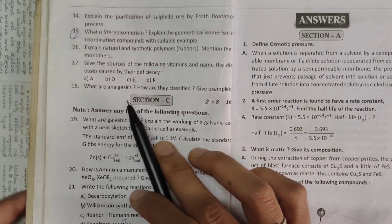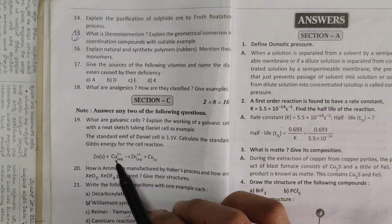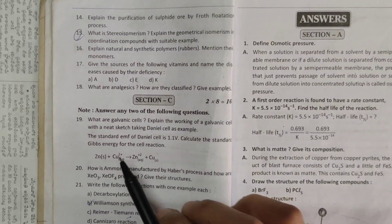And next one, what are analgesics and how are they classified, give examples. And finally, Section C.